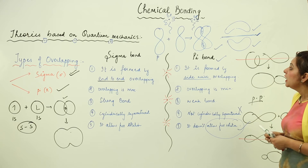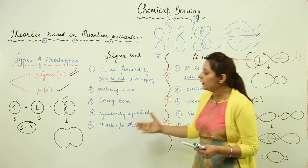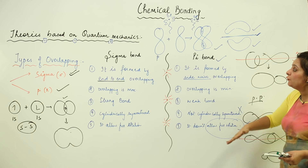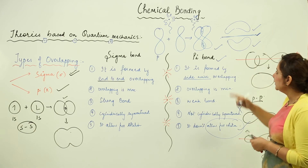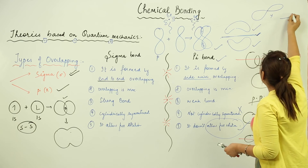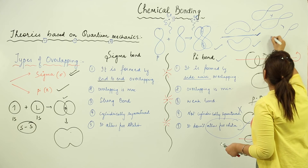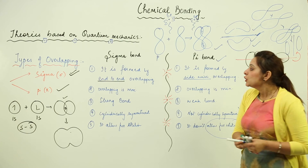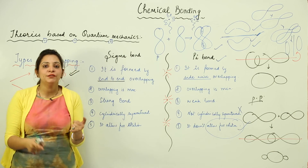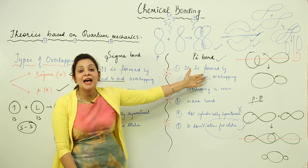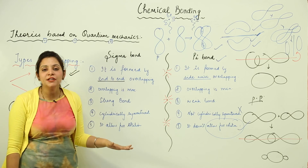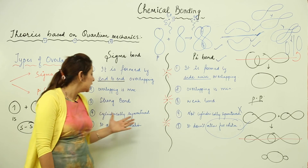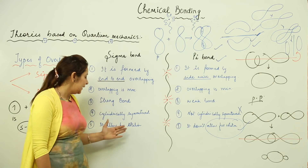Sigma bonds can be formed between s-s, s-p, and p-p orbitals where the p is symmetrical around the internuclear axis. Pi bonds are formed between p-p orbitals through sidewise overlapping. In terms of overlapping region and strength, Sigma bonds have maximum overlap and are stronger, while Pi bonds have minimum overlap and are weaker. Sigma bonds are cylindrically symmetrical; Pi bonds are not, and they do not allow free rotation.